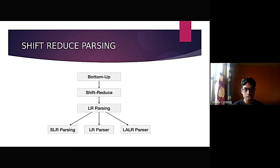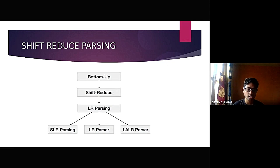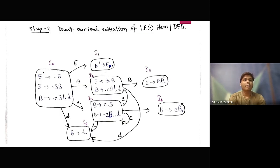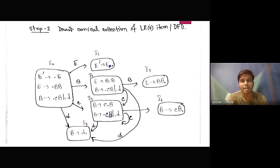Then it comes to shift-reduce parsing — bottom-up parsing which is then substituted by shift-reduce, then LR parsing, which is again divided into three subcategories: SLR parsing, LR parser, and LALR parser. Here we draw the canonical collection of LR zero items or DFA.